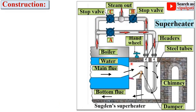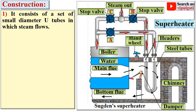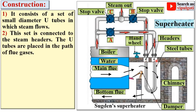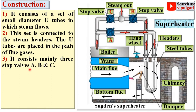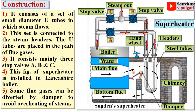Now, the construction of the superheater. This figure helps understand the construction clearly. It consists of a set of small-diameter U-tubes through which steam flows. This set is connected to the steam headers. The U-tubes are placed in the path of the flue gases. It consists mainly of three stop valves: A, B, and C. This superheater is installed in a Lancashire boiler. Some flue gases can be diverted by the damper.